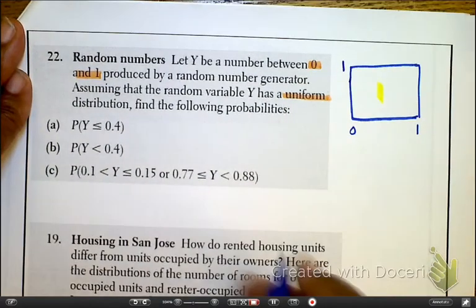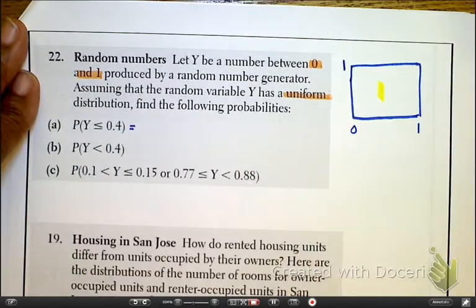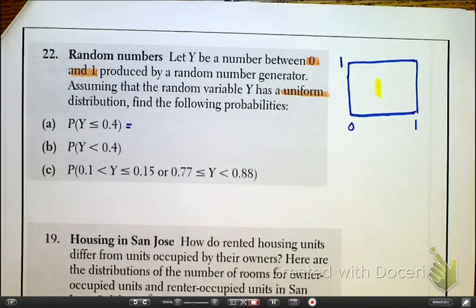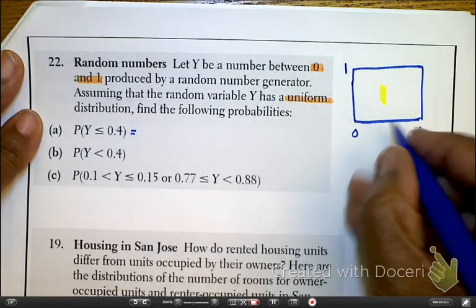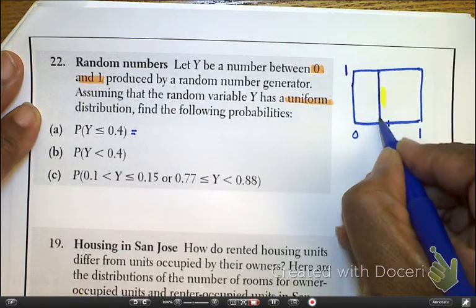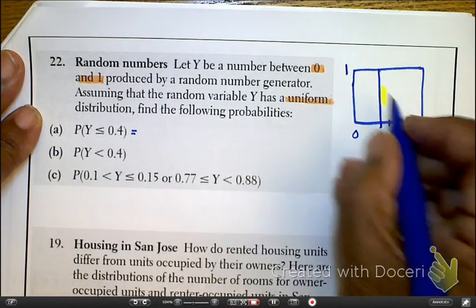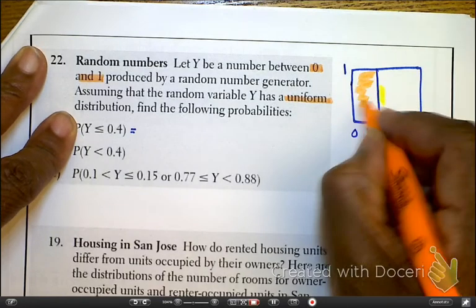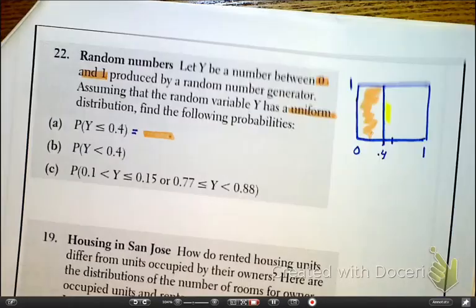Now, as I look at this to answer this probability, do I truly need to draw a model for this? The answer is no, but I'm going to draw it for you anyway. So this is 0.5, 0.4 is about here, so less than or equal to is about here. Less than or equal to is going to be in the orange that I've shaded. So that's going to be 0.4.